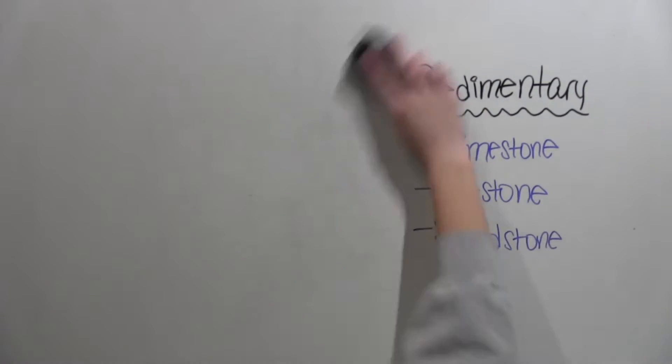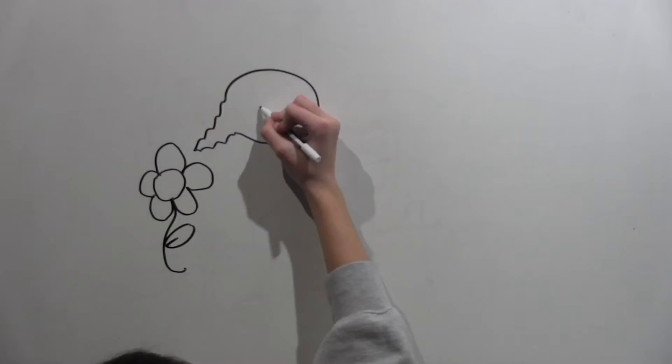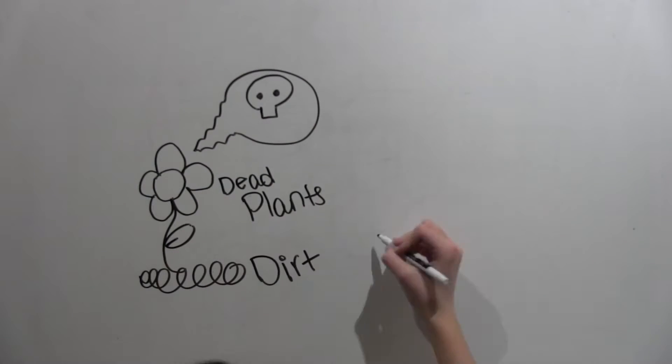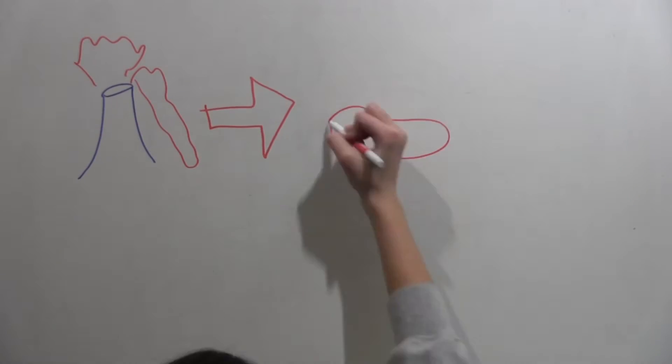Sedimentary rocks are formed from all of Earth's materials like sand, dirt, and dead plants. Sedimentary rocks would be like limestone, siltstone, and sandstone.